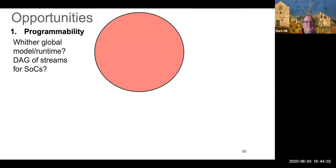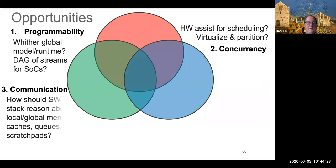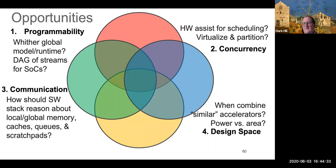So I'll finish here with a final cartoon. For programmability, what should our runtime model be? Can we do some kind of DAG of streams or stream data flow? For concurrency, how do we virtualize these accelerator blocks, these IP blocks? How do we partition them if they're used more than once? For communication, as I said, what does the hardware do? And more importantly, what does the software do? And then finally, the design space is really large. When do we combine similar accelerators? If you combine a similar accelerator, it can save a lot of area, but then the accelerator may be less optimal at doing any given thing, costing you power. How is that tradeoff made?